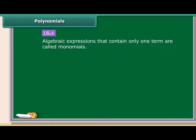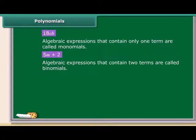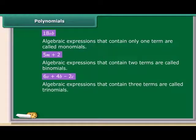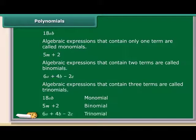Children, see this algebraic expression. It has only one term. This type of algebraic expression is called monomial. Now, is 5m plus 2 a monomial? No, it has two terms. This type of algebraic expression is called binomial. The expression 6a plus 4b minus 2c is not a binomial because it has three terms, right? So this type of algebraic expression is called trinomial. Remember, all algebraic expressions that have one or more than one terms are called polynomials. Therefore, monomials, binomials and trinomials are all polynomials.